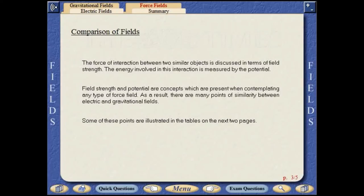The force of interaction between two similar objects is discussed in terms of field strength and the energy is measured by the potential. Field strength and potential are concepts which are present when contemplating any type of force field. As a result, there are many points of similarity between electric and gravitational fields.